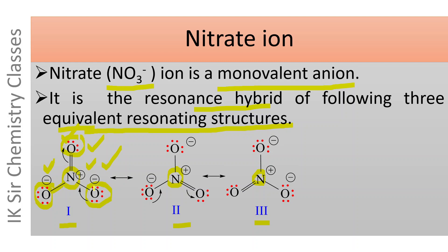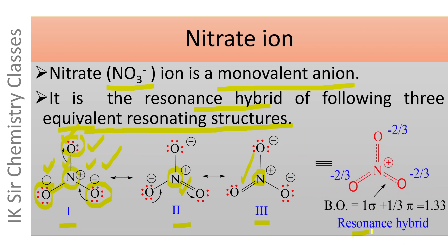It may be noted that the position of the pi bond changes from one place to another periodically. The pi bond is present in structure one; in structure two it shifts to another position, and in structure three it shifts to a third position. The resonance hybrid of these three resonating structures is the weighted mean of these three structures.